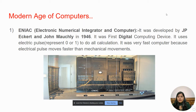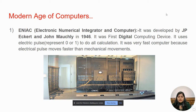ENIAC was created by J.P. Eckert and John Mauchly in 1946. This was the first digital computing device, which worked on electric pulses. The electric pulse was used to donate 0 and 1 for calculations. It was a fast machine because electric pulse movement is faster than any mechanical movement.